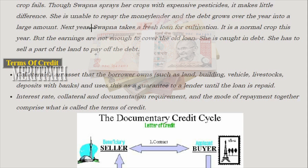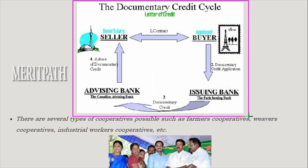Now we learn about the terms of credit. Collateral is an asset that the borrower owns — such as land, buildings, vehicles, livestock, or deposits with banks — and uses as a guarantee to a lender until the loan is repaid. Interest rate, collateral, documentation requirements, and the mode of repayment together comprise what is called the terms of credit.